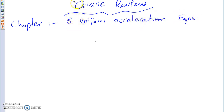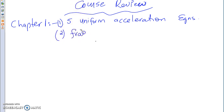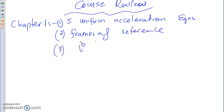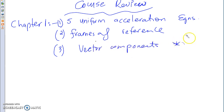That's the first thing that we looked at, and this is Chapter 1. The next thing you need to remember from here was we did frames of reference and, of course, vector components — which was the key thing that we learned in this chapter.